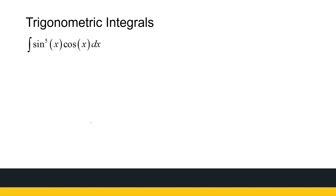So this is one of the types of integrals we're going to look at today — something like sine to the power 5x times cos x dx. When we looked at substitution and integration, we also looked at integrals of this type; we're just going to expand on that now. What we notice is we've got sine of x and cos of x — they're each other's derivatives, so substitution looks like a good idea. We just need to choose which one to substitute.